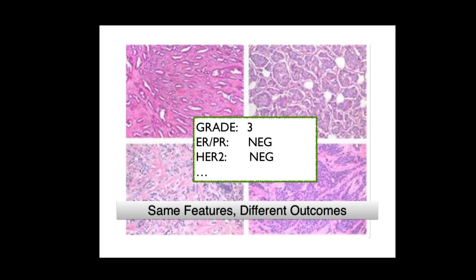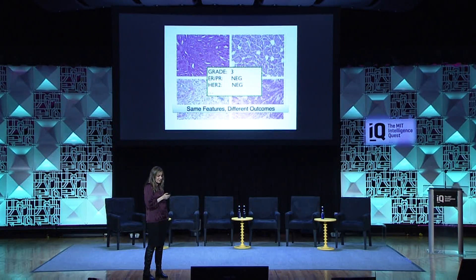Here you can see pathology slides of four women. According to the variables and markers, they're exactly the same. Three of them survived and were fine; another one doesn't. When you look at the variables they all look the same, but their raw information is very different. That's exactly the issue — we are losing all the information needed to make this determination.